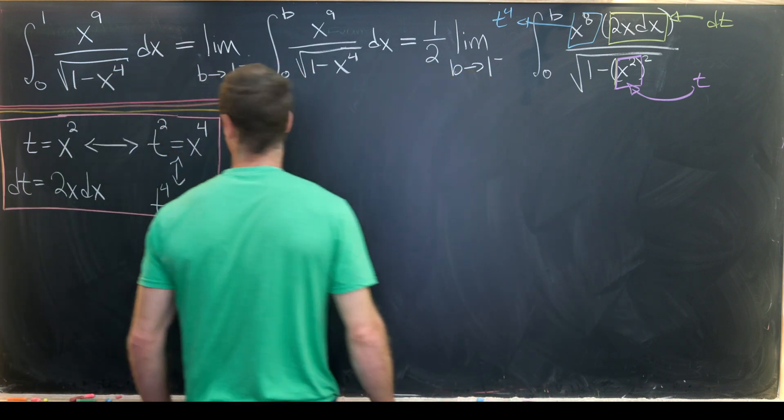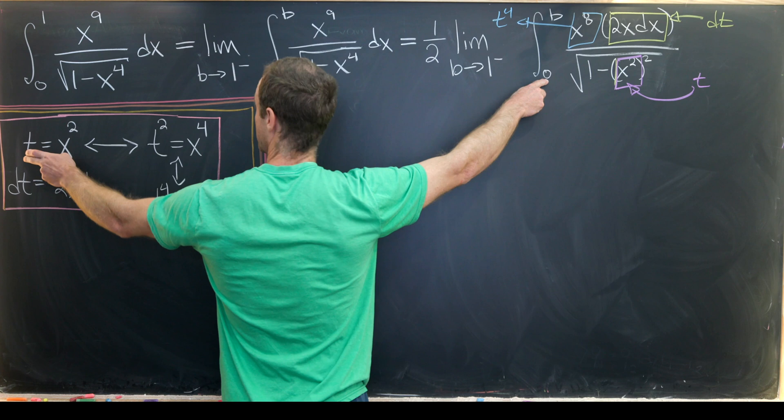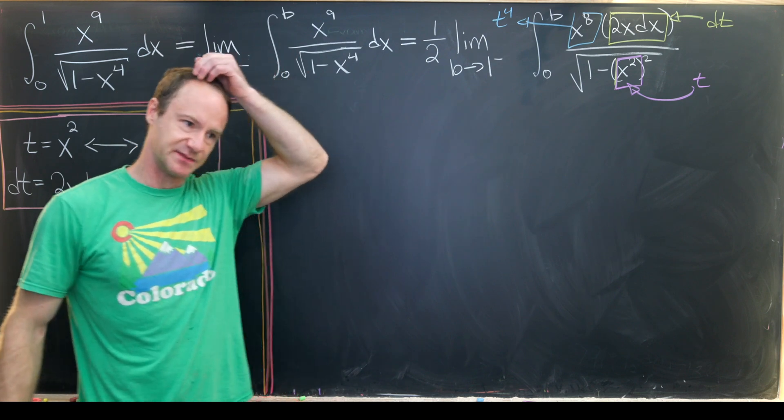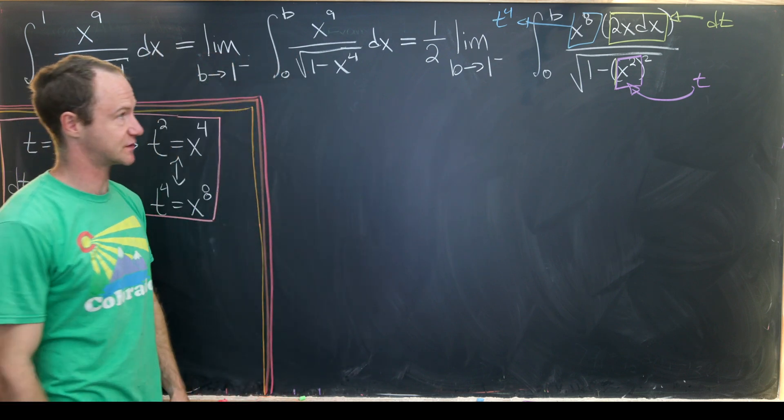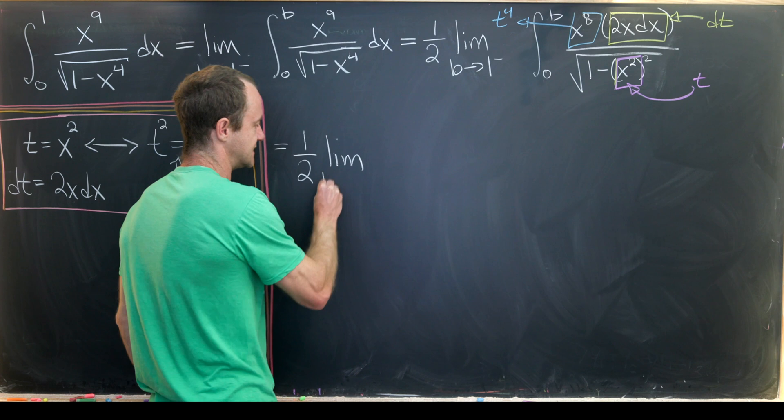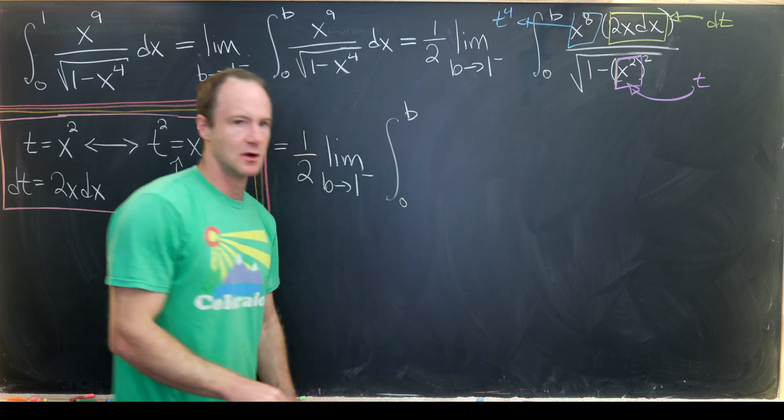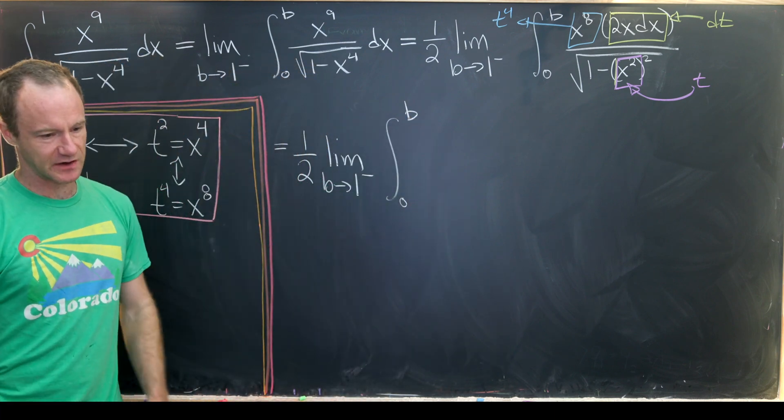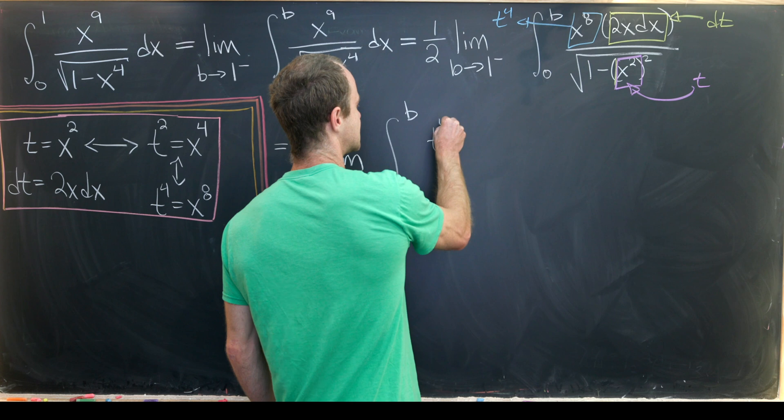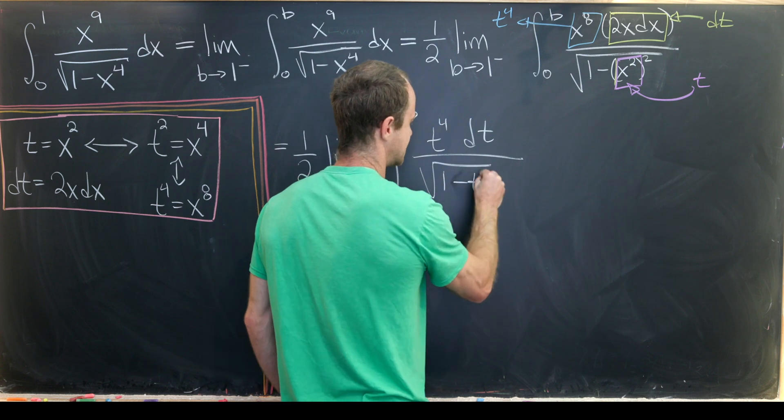When x = 0, then t = 0. When x = b, t = √b, but since we're taking the limit as b approaches 1, we don't need to replace that. This leaves us with 1/2, the limit as b approaches 1 from below, the integral from 0 to b of t^4 dt over the square root of 1 - t². Now we're set up to do a trigonometric substitution.